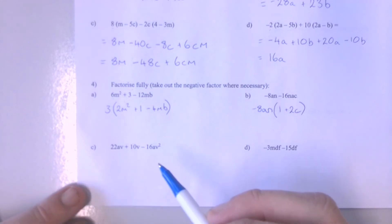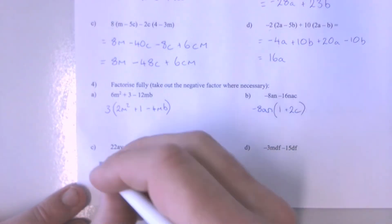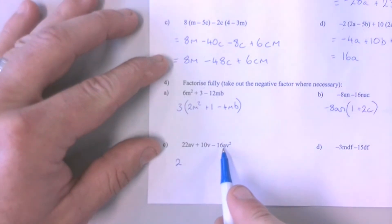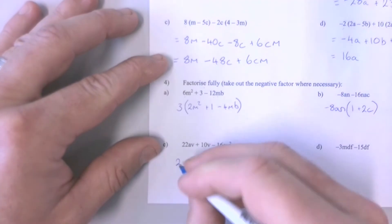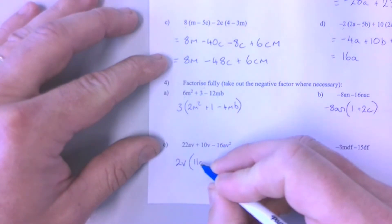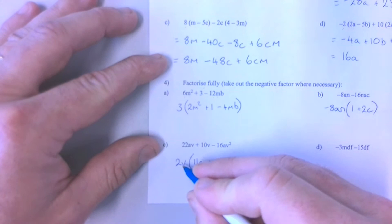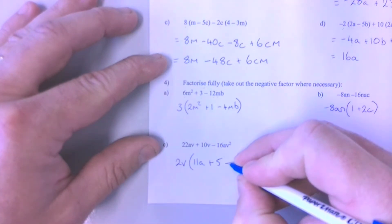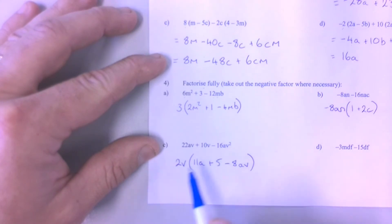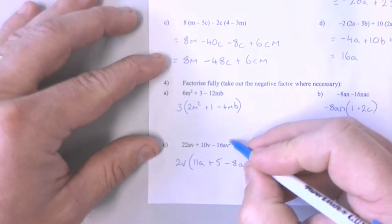Question 4C is asking me to factorise fully, so I'm looking for all the common factors across these terms. Now 2 will go into each of these, so we'll take that out the front. A is not across all terms, so it will have to remain within the brackets. V is across all terms, so we'll take the V out the front. That leaves us with 11A here — because 2V times 11A makes 22AV — it leaves us with 5 here, because 2V times 5 makes 10V. And it leaves us with minus 8AV here, because 2 times minus 8 makes minus 16, V times A makes the AV section, and V times V is where the squared comes from.